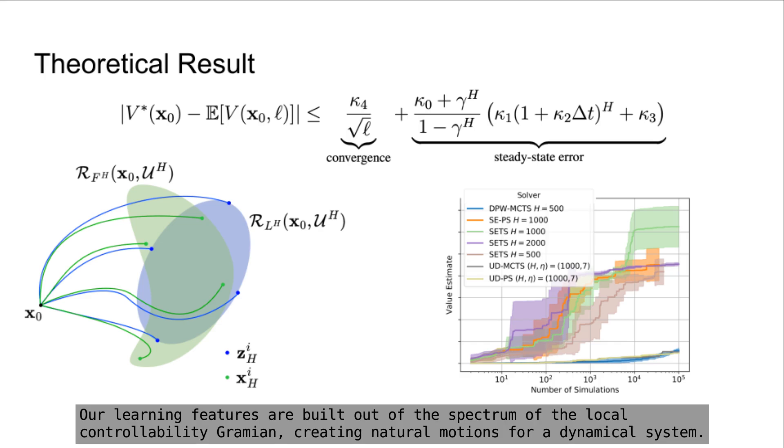Our learning features are built out of the spectrum of the local controllability Gramian, creating natural motions for our dynamical system.